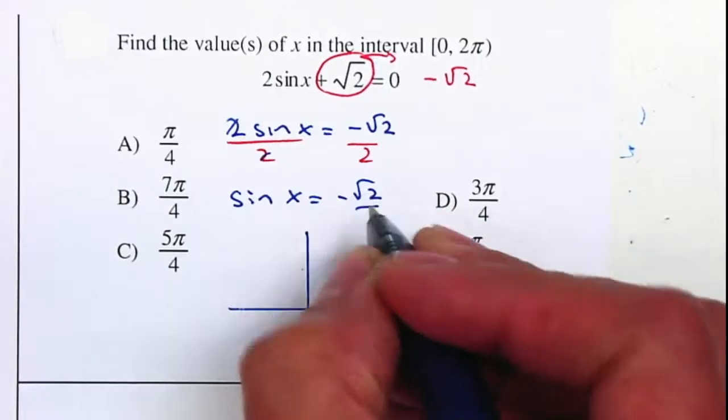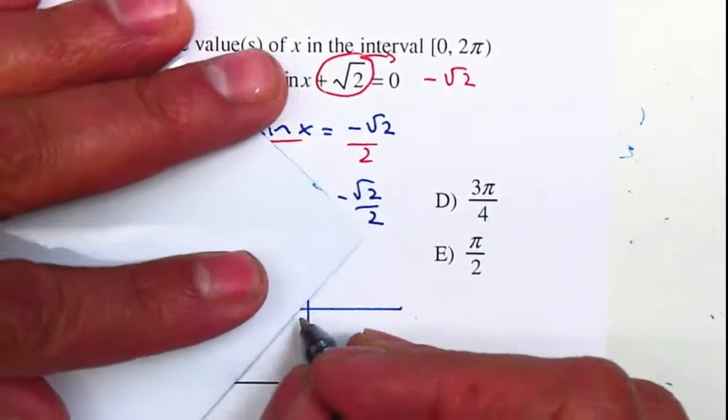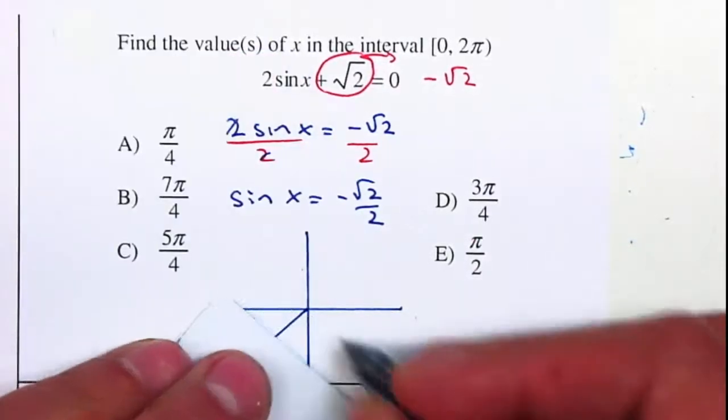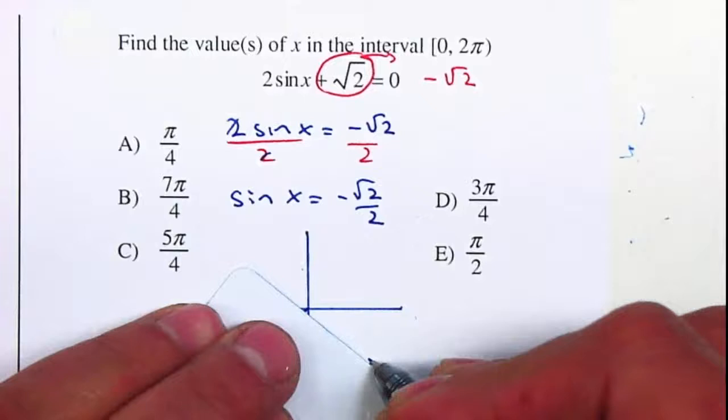Square root of 2 over 2 are your 45s or π over 4 angles. So one angle will be here, and another angle will be here.